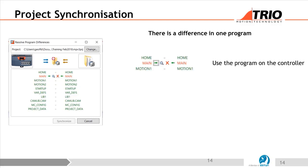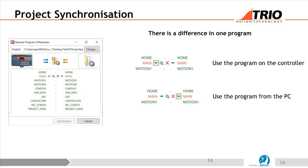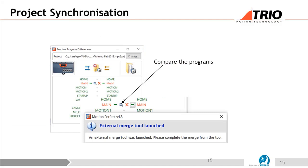We can make some choices here with these buttons. We can either use the program on the controller — for example, if a colleague made changes overnight that we want to keep, we copy them across to the PC. Or we can do the opposite: if those changes were a disaster, we copy our original program from the PC back onto the machine. There's also an external merge tool that comes with MotionPerfect — a third-party tool called WinMerge gets installed, though other comparison tools are available. WinMerge is the one I use.